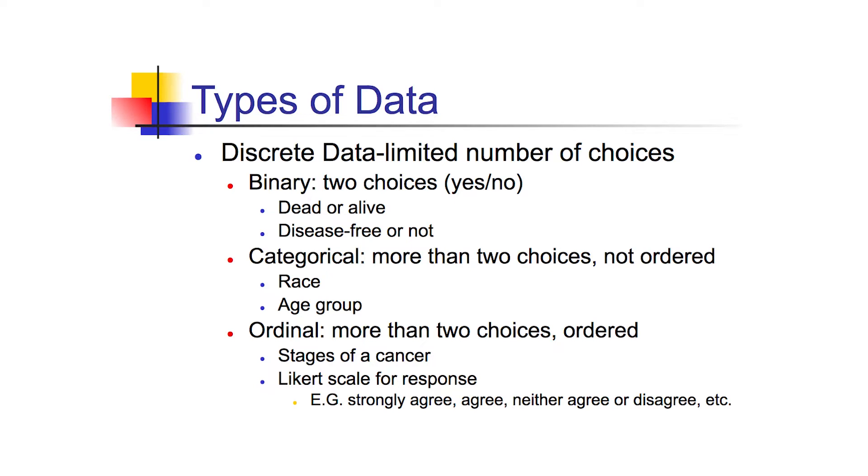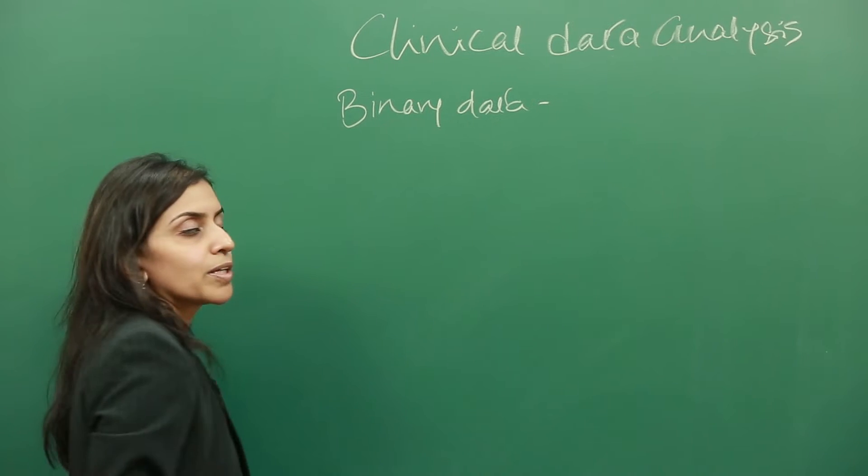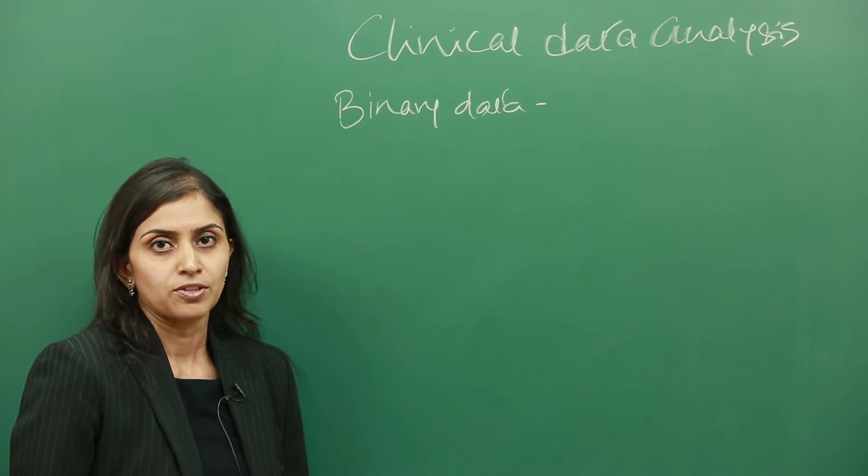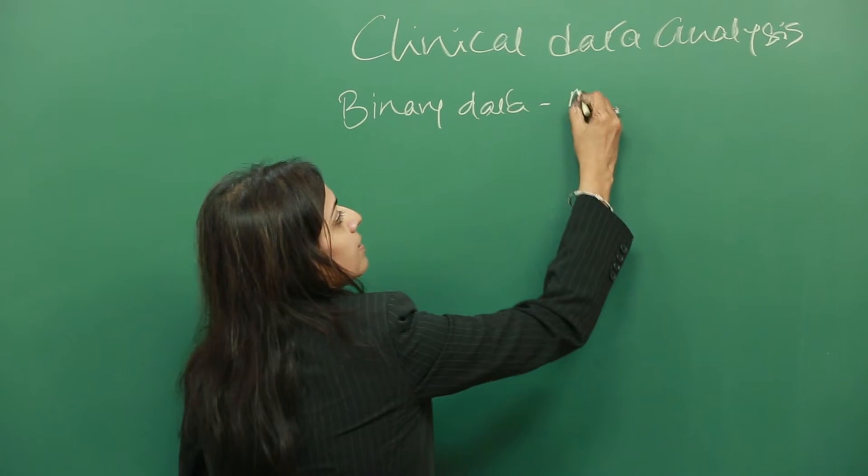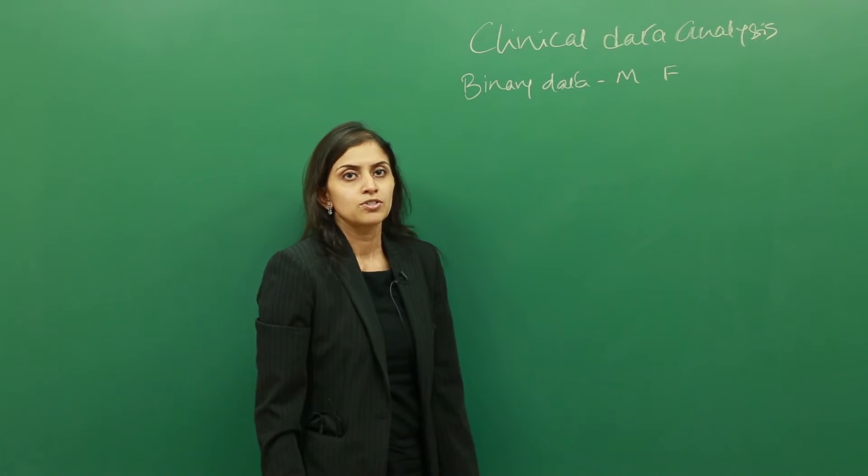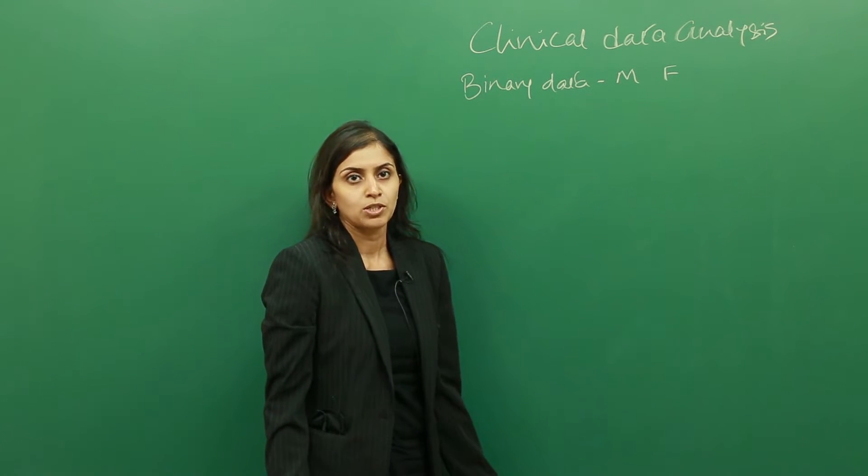Data is primarily considered to be of three different kinds. There's binary data, which can only be coded in two different values. It only has two responses like gender. Gender is either male or female. Binary by definition means two, so the response can only be two variables.